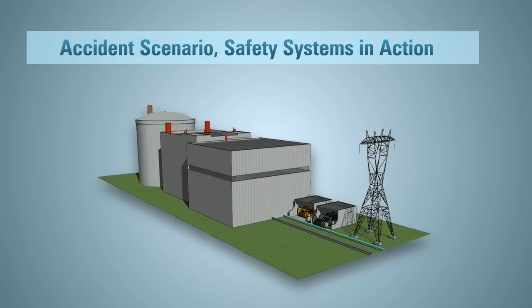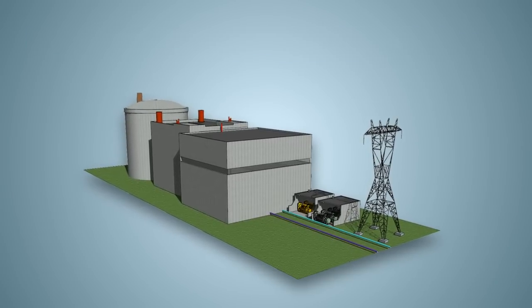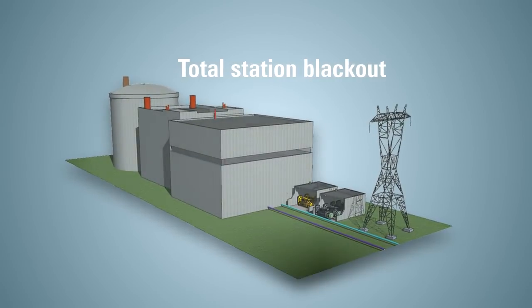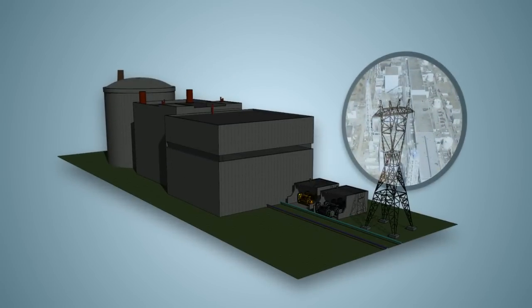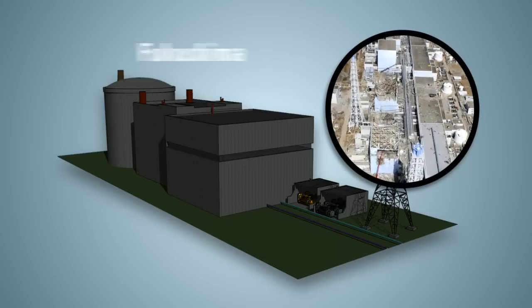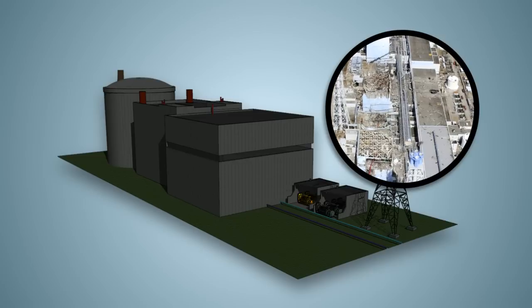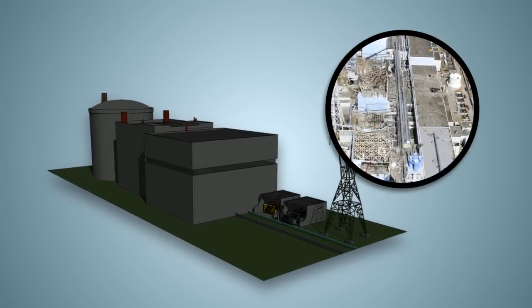To help you understand how the different safety systems work in an accident, let's look at an accident scenario where there is a total station blackout. This is what happened in Japan at the Fukushima Daiichi nuclear power plant after a 15-meter-high tsunami flooded it in 2011.